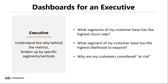When it comes to dashboards for executives, they're often going to want to know the why behind the metrics, broken up by specific segments and verticals — things like what segment has the highest churn rate, or the flip side, what segment has the highest likelihood to expand or upsell. I want to highlight the at-risk accounts metric because we hear all the time about companies with very detailed health scoring in Excel. If you share with an executive which accounts are at risk, the first question they'll ask is why — and if you have to break out a complex Excel formula to explain it, it's not going to go over well.